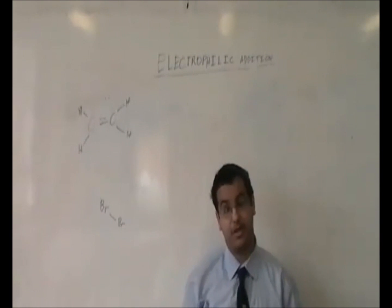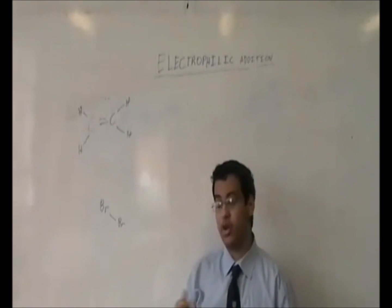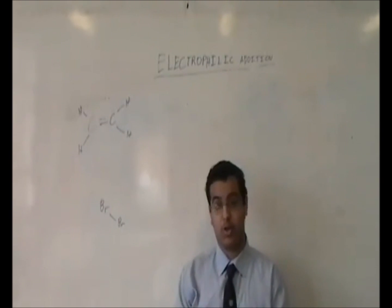Electrophilic Addition is the addition of either a diatomic halogen, for example chlorine or bromine - well all halogens are diatomic - or a hydrogen halide, for example hydrogen bromide, hydrogen iodide, or hydrogen chloride.